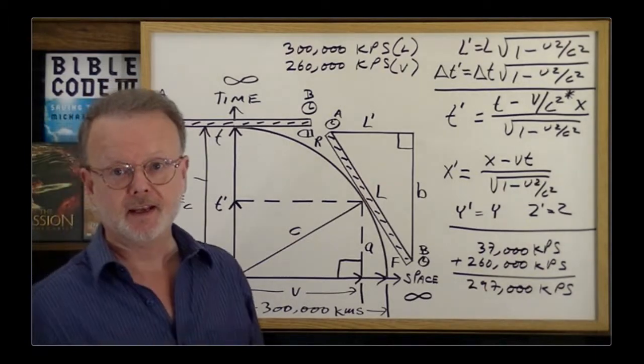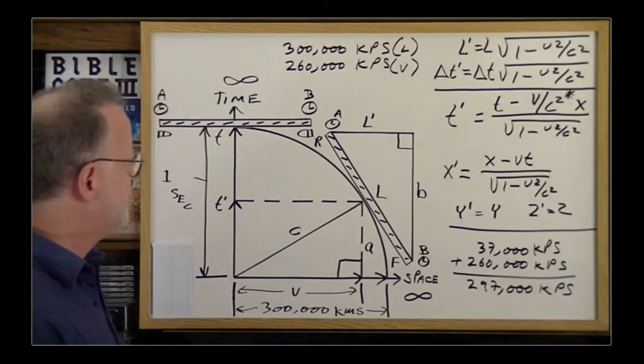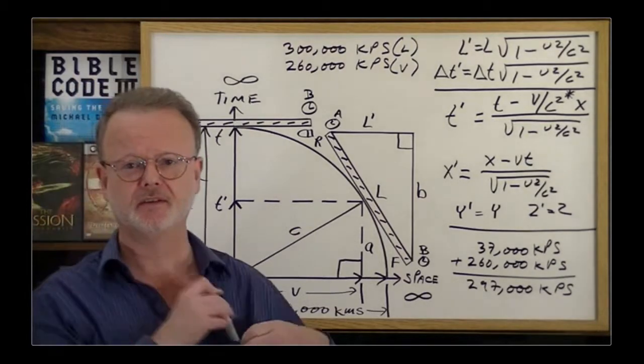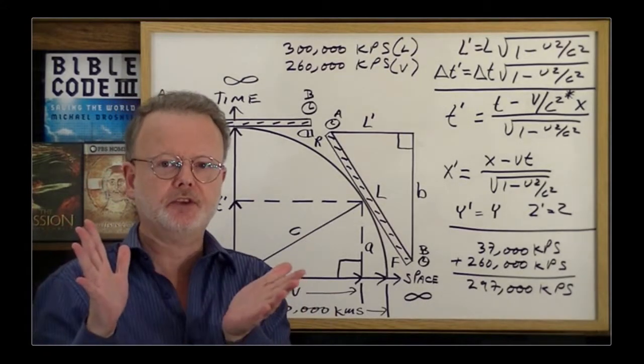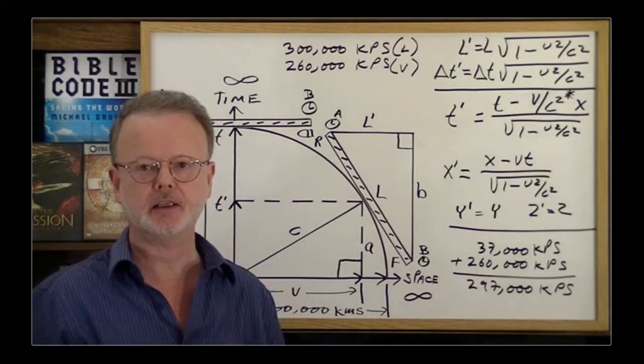But in actual fact it's not the case at all. So you might wonder why isn't it possible to add one velocity to another like that - 260 plus 260 producing the final 520?